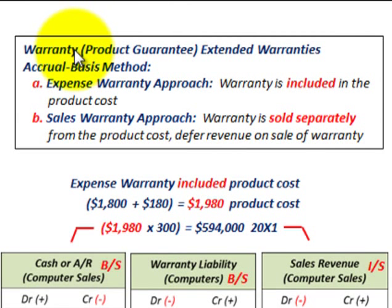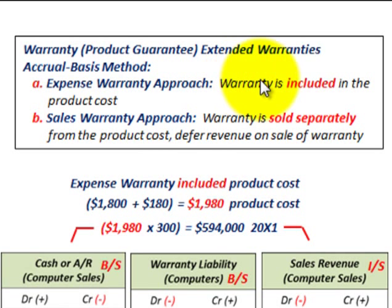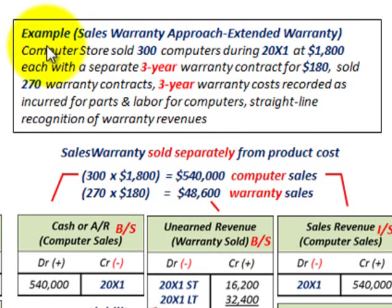We're going to be looking at warranties or product guarantees, specifically extended warranties, and we're going to use the accrual basis to account for them. We have two different methods: the expense warranty approach where the warranty is included in the product cost, or the sales warranty approach where the warranty is sold separately from the product cost and we have a deferred revenue on the sale of the warranty itself.